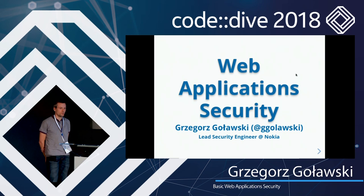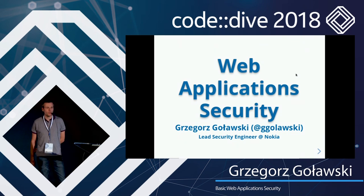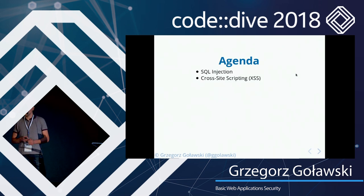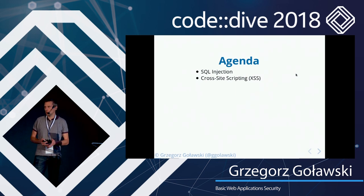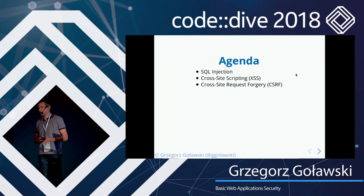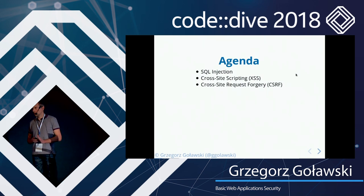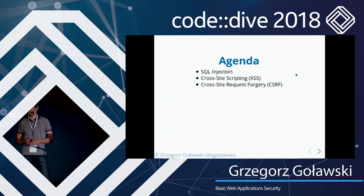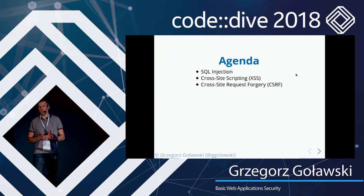Thank you. I'm Grzegorz Goławski and today I'm going to talk about web application security. In particular, I'm going to talk about three security vulnerabilities: SQL injection, which is a vulnerability in how you build SQL queries; cross-site scripting, a vulnerability in how you output untrusted data on the web page; and cross-site request forgery, a vulnerability in how you validate the originator of a request. This is going to be a live demo showing all three vulnerabilities — how they look, how they can be exploited, how disastrous they can be, and how to protect against them. I'll use my simple but very vulnerable web application.